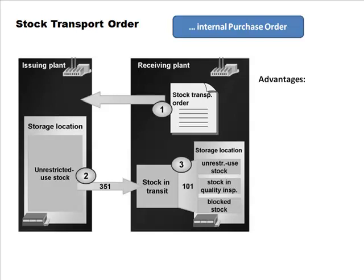There are several advantages to using a stock transport order over regular goods movements. One key advantage is MRP integration — MRP creates procurement proposals. MRP can create a planned order which can be converted into a purchase requisition.